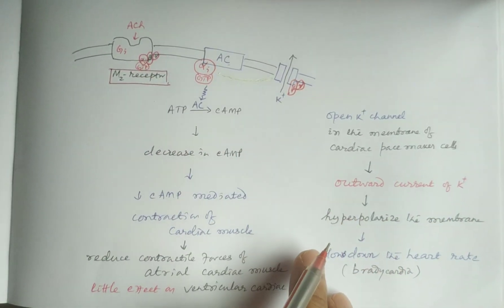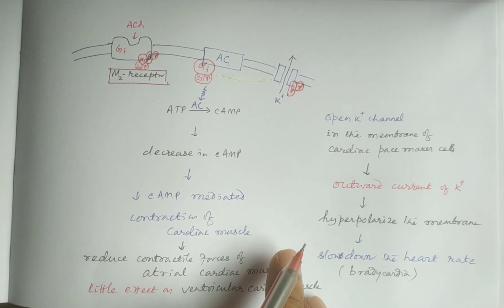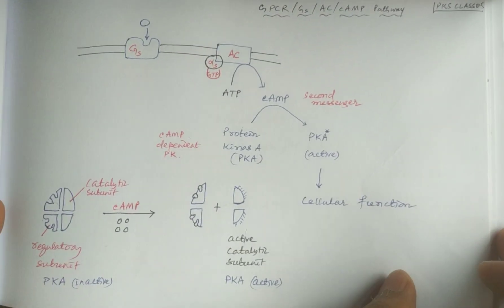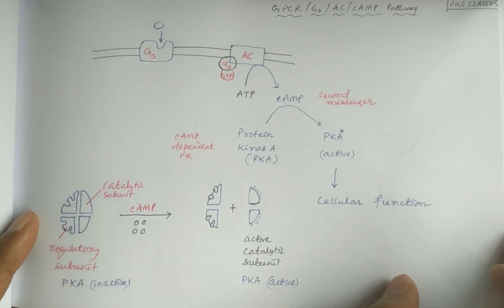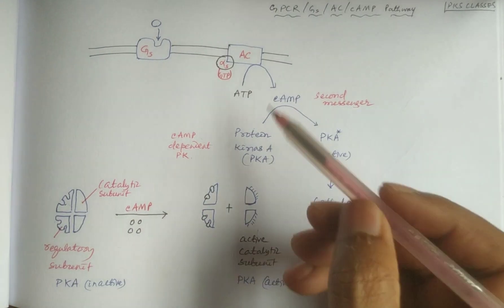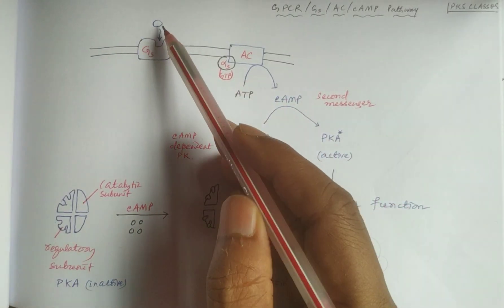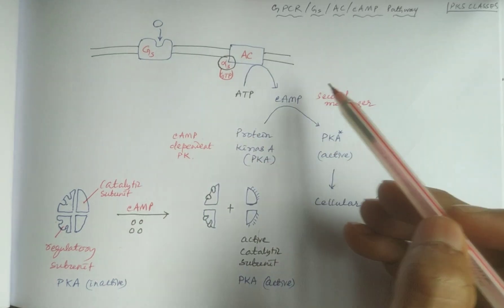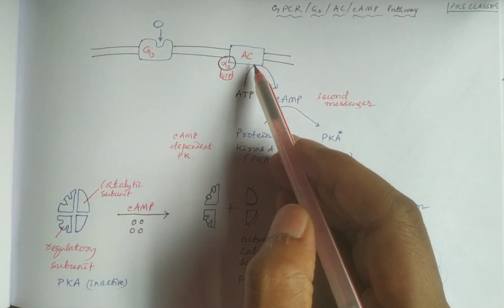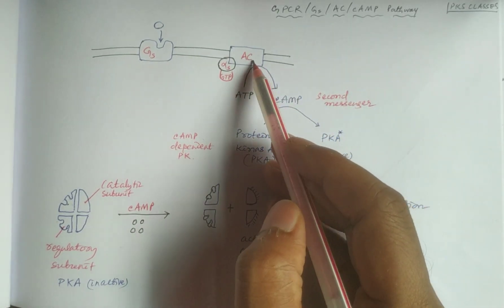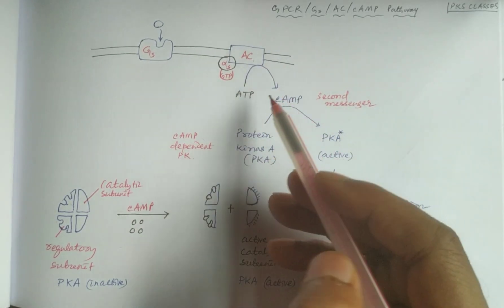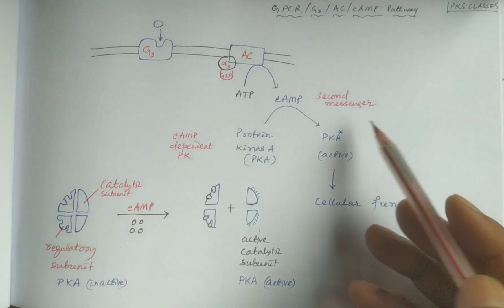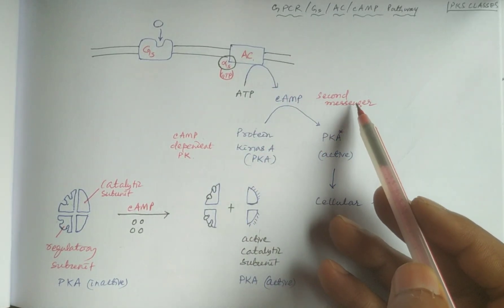Let us look at the G-protein coupled receptor adenylate cyclase and cyclic AMP pathway. When an agonist binds to a Gs-type G-protein coupled receptor, there will be activation of adenylate cyclase, which converts ATP to cyclic AMP. Cyclic AMP is the second messenger.